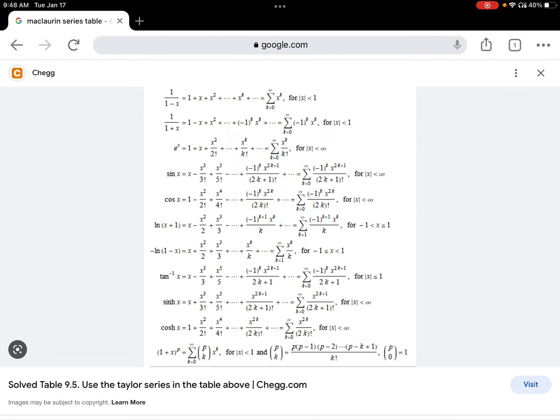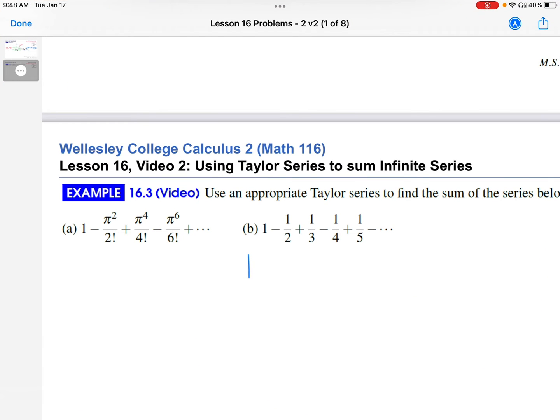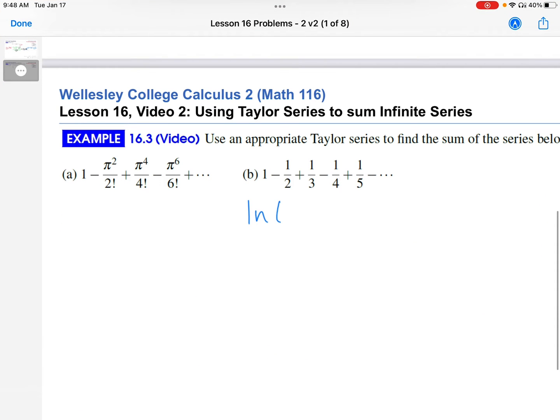I'll just pull up the table once again. Let's look at 1, 2, 3, 4, 5, 6. Let's look at the ln of x plus 1 series. So that's number 6 down from the top. So that's x minus x squared over 2 plus x cubed over 3, so on and so forth. So that is the ln of 1 plus x or x plus 1, which is x minus x squared over 2, x cubed over 3 minus dot dot dot.